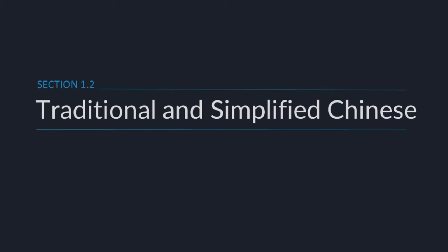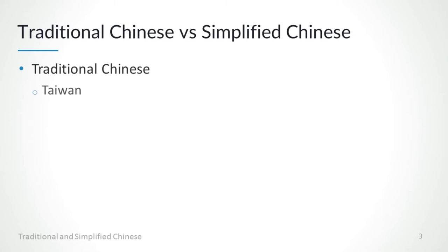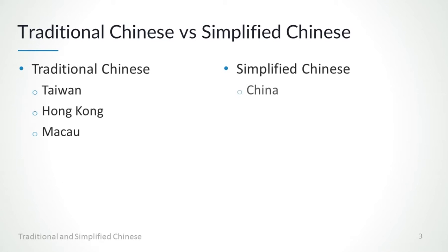In this lesson, we'll talk about traditional and simplified Chinese. While Chinese character is an open set, there are various officially recognized national standards. Specifically, traditional characters are used in Taiwan, Hong Kong, and Macau, while the simplified form is used in China, Singapore, and Malaysia.